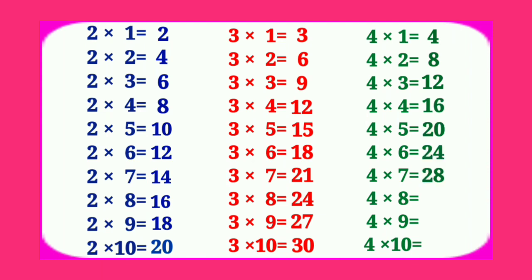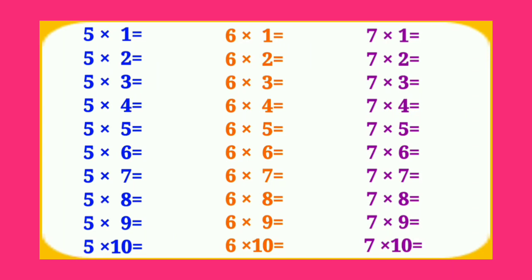4 8's are 32, 4 9's are 36, 4 10's are 40. Table of 5. 5 1's are 5, 5 2's are 10, 5 3's are 15, 5 4's are 20, 5 5's are 25, 5 6's are 30.